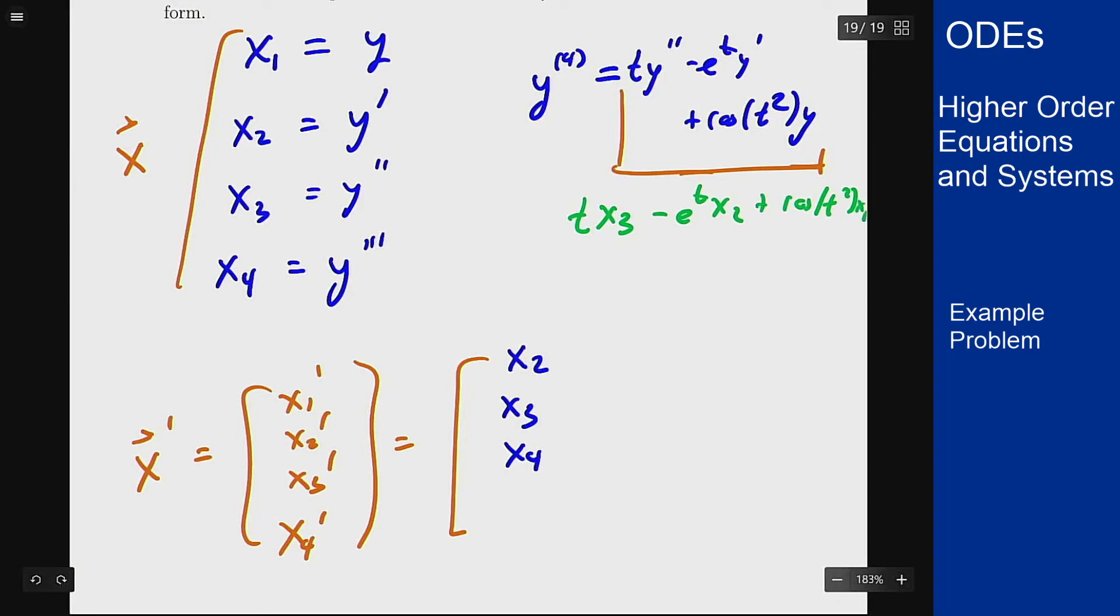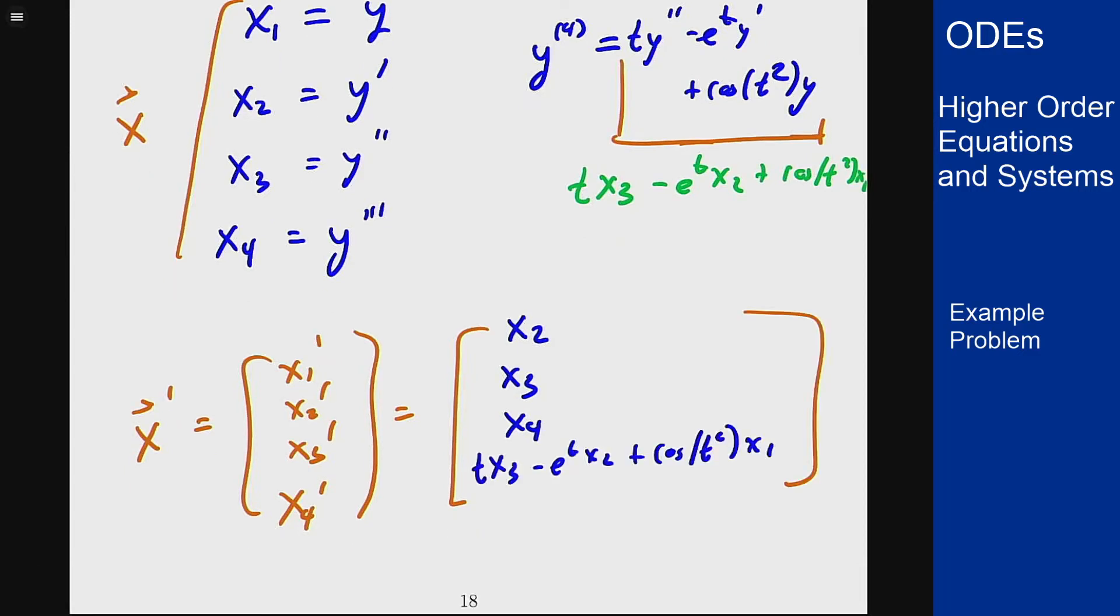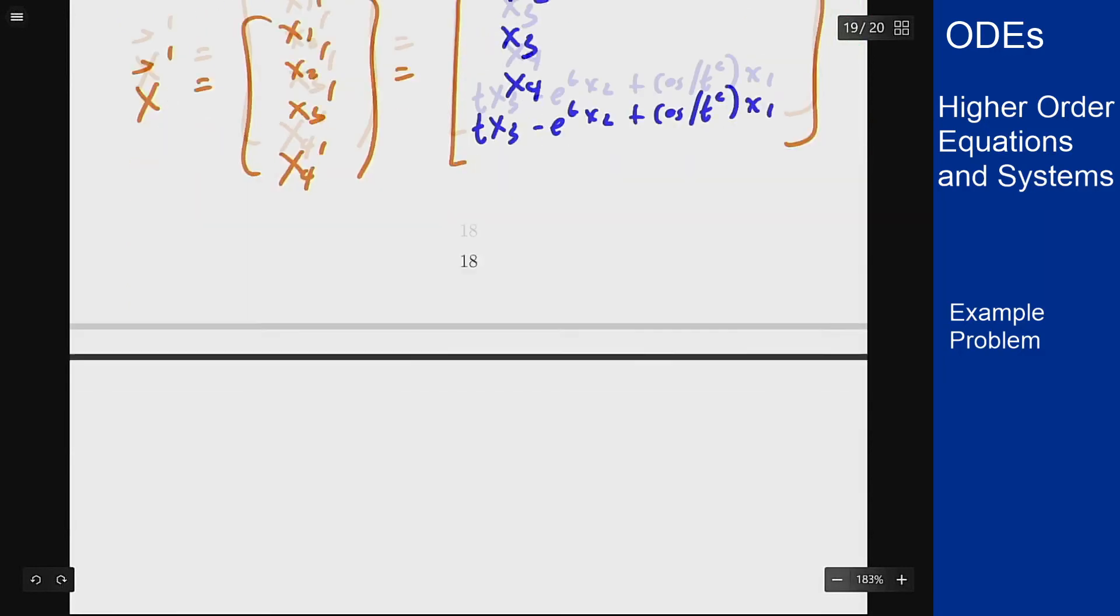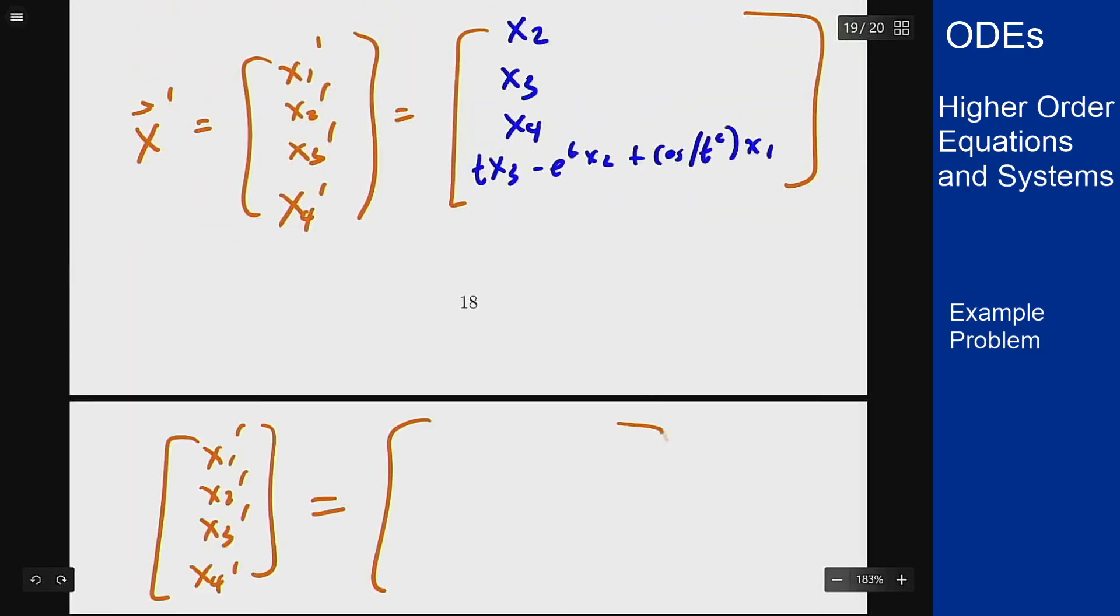So I can write that in the spot here and that will work totally fine for an answer here, but I can go one step further, write an actual matrix form separating out the different components to get something like a matrix times x1, x2, x3, x4. But how do I get this matrix?